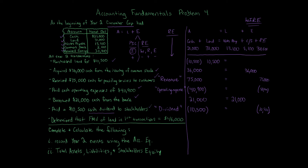Transaction 7: Determined that the fair market value of land in the first transaction equals $46,000. There's no effect here — it's just saying the land we purchased for $10,500 has gone up in value. That's not an accounting event; there's no realization event. So we've now gone through all the events.